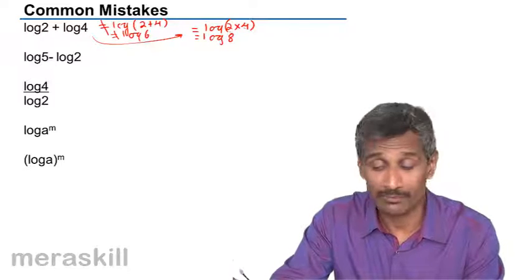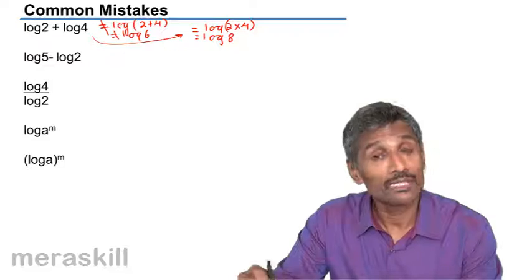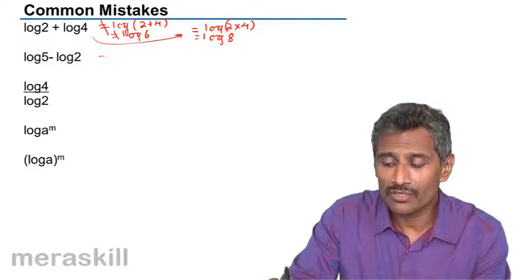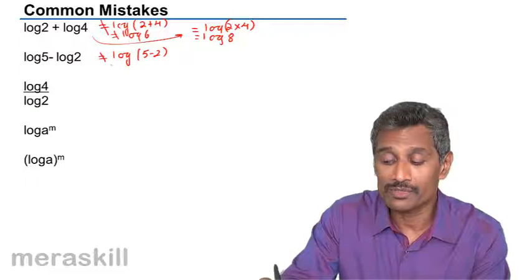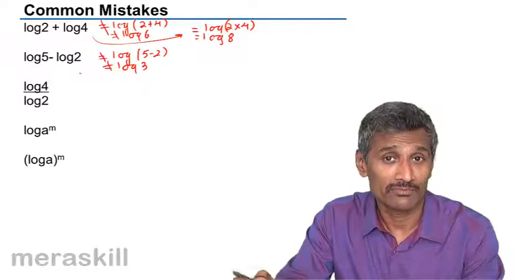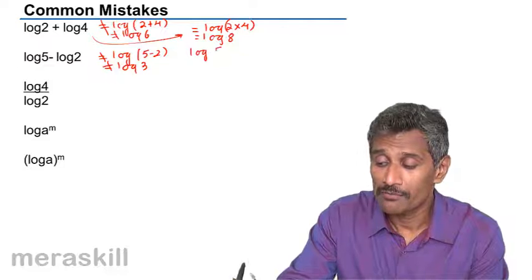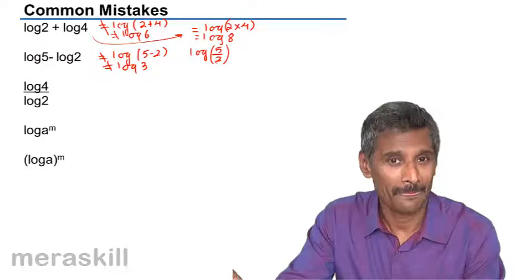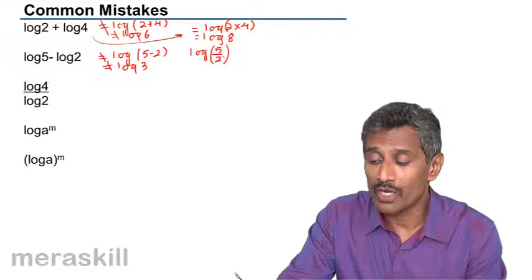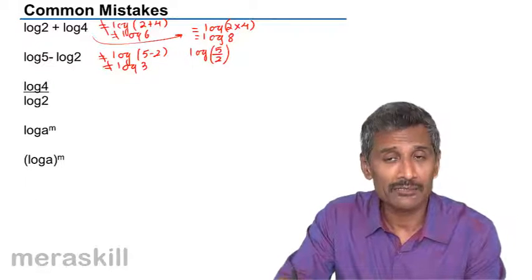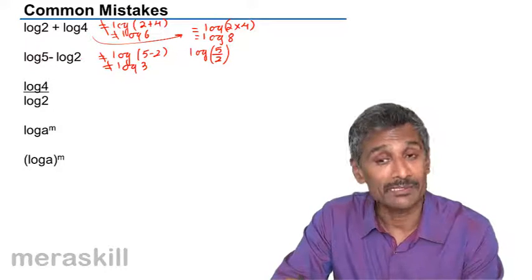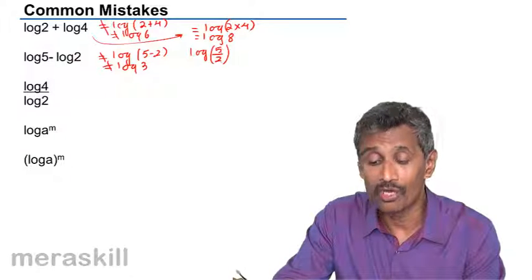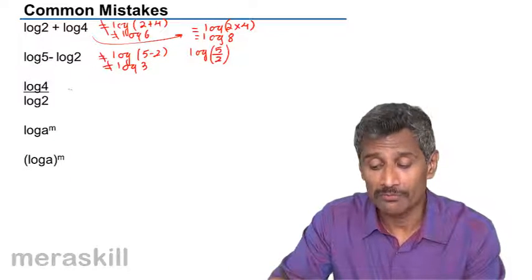So log a + log b = log(ab), not log(a + b). Similarly, for log 5 minus log 2, there is a tendency to take log as a common factor and write log(5 − 2), which is definitely not equal to log 3. The correct answer is log(5/2), because the rule is: log a − log b = log(a/b). It is not log(a − b).